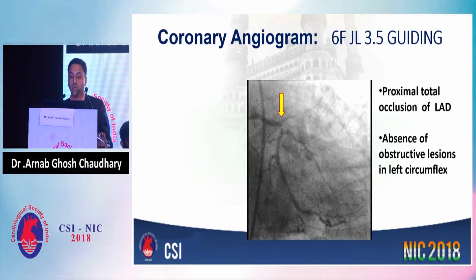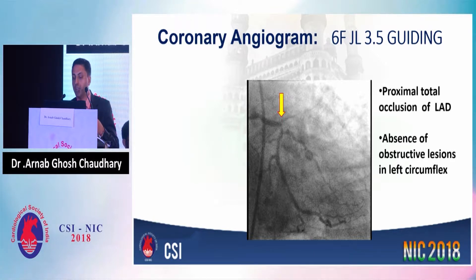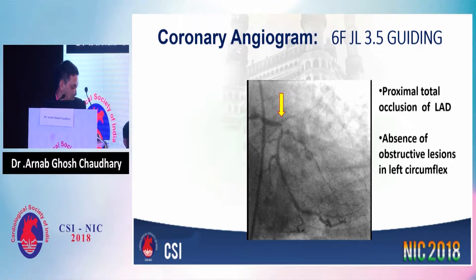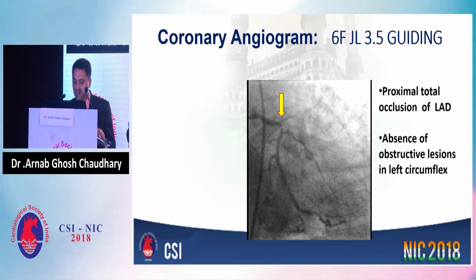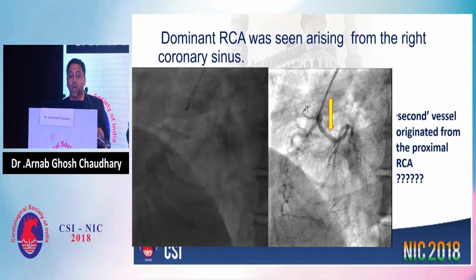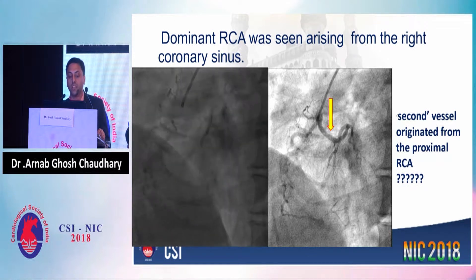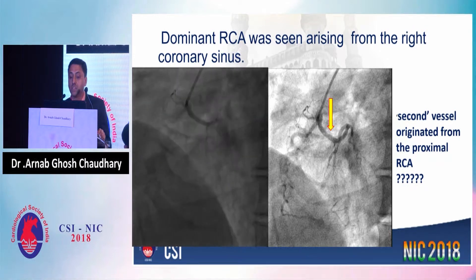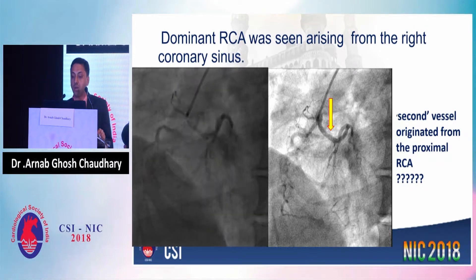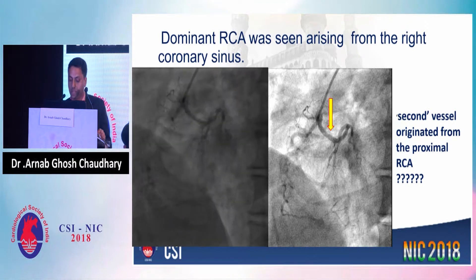In the coronary angiogram, in the left shoot, we can see there is proximal total occlusion of the LAD, and there was no significant flow-limiting lesion of the left circumflex. In the right shoot, a dominant RCA was seen arising from the right coronary sinus, and a second vessel originated from the proximal RCA.